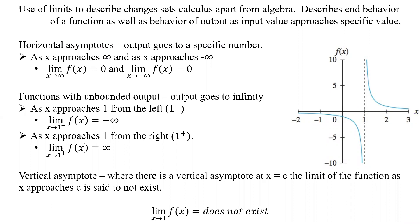As x approaches positive infinity and as x approaches negative infinity, in each case the limit of f(x) goes to 0, and that's going to be our horizontal asymptote.